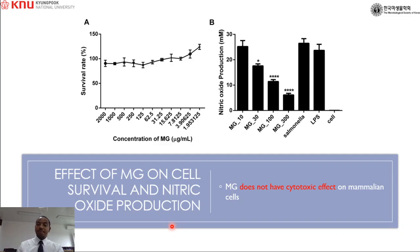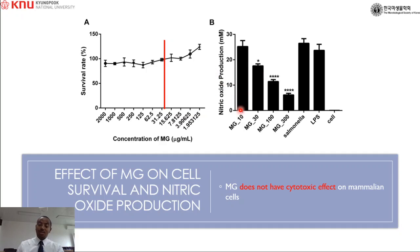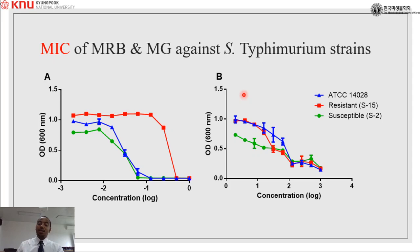We began by testing the effect of methyl gallate on cytotoxicity of host cells using RAW cells. Up to 2000 µg/mL we didn't see any significant cytotoxic effect. At around 62.25 µg/mL there was no inhibitory effect and 98% of cells survived. Therefore for subsequent experiments we chose 30 µg/mL of methyl gallate. We also determined inhibition of nitric oxide by methyl gallate and observed a dose-dependent relationship from 10 to 300 µg/mL with a significant effect in reducing nitric oxide.